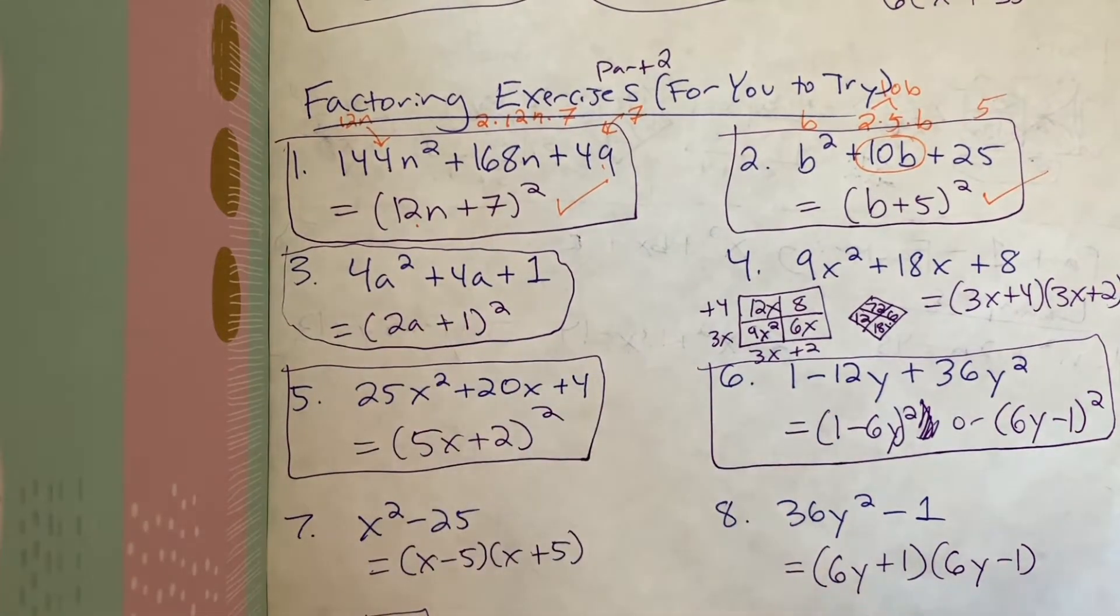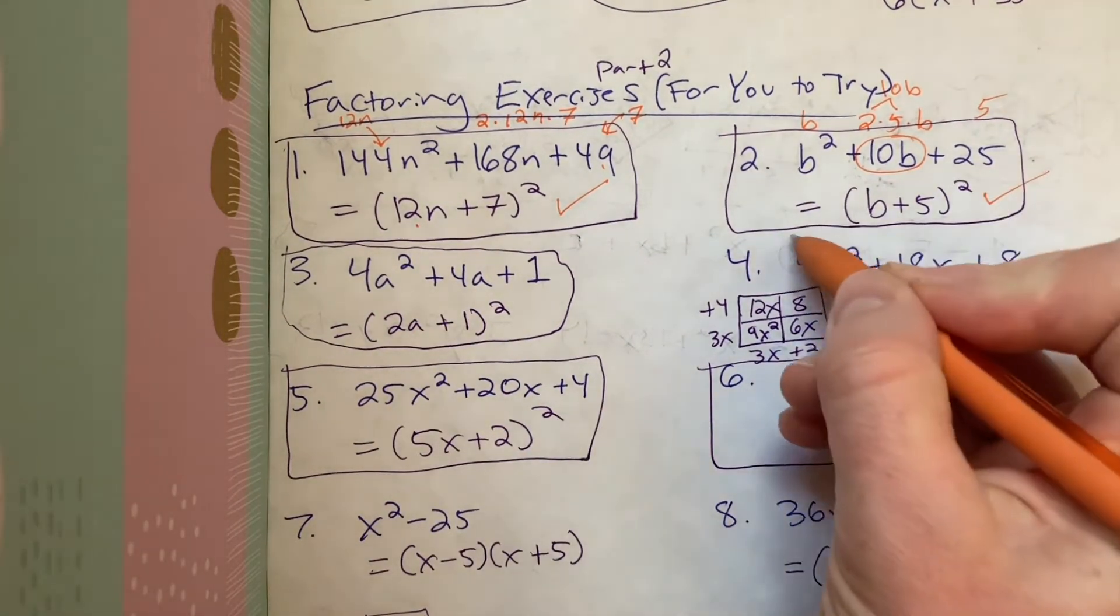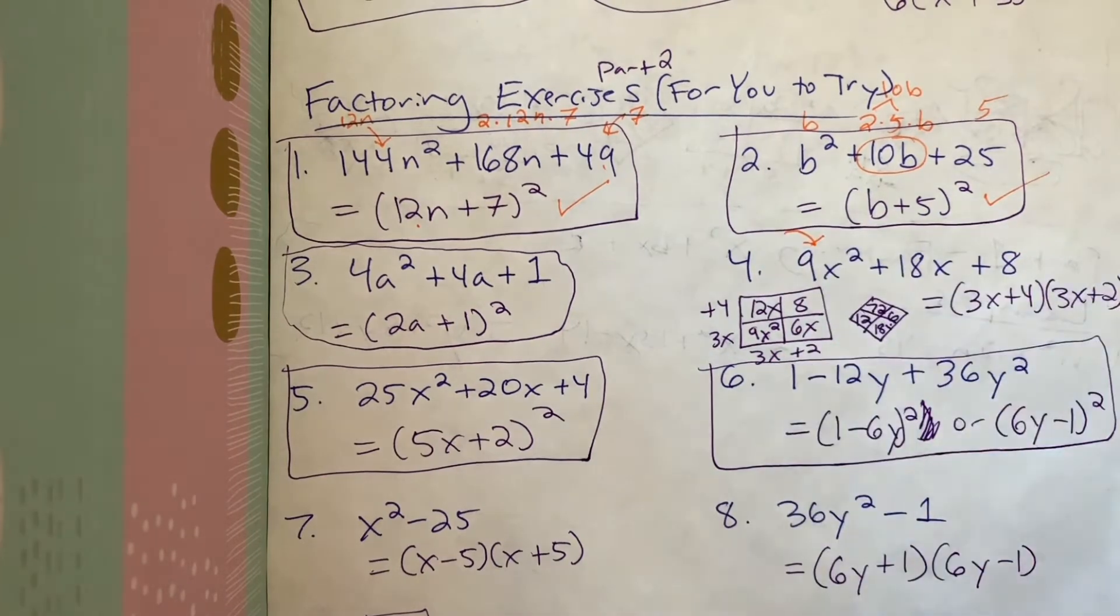Number three is good to go. That one was pretty straightforward. Number four, including number four here because not every factor in your problem is straightforward.